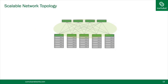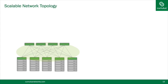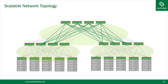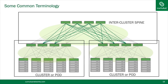Why is this network scalable? Like a Lego block, you can take multiple of these pods and slap them together to build a larger network. Each one of these building blocks is called a pod, cluster, or brick. Interconnecting all these clusters is an inter-cluster spine network or inter-pod spine network. The topology allows you to compose any size network you need.